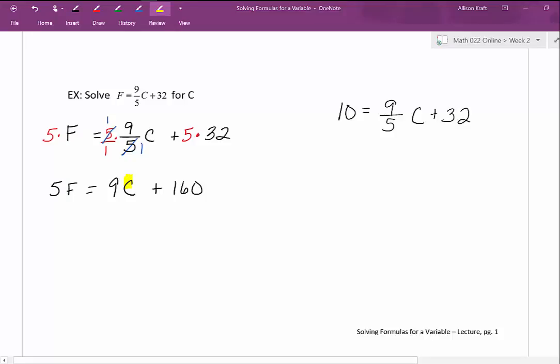We've eliminated the fractions. We're isolating C. I want to get all the other terms away from the C. So back to our problem over here. If I had eliminated the fractions by multiplying everything by 5, I would have 50 equals 9C plus 160. Since all of the terms containing a C are on the right-hand side, I want to move my constant terms to the left-hand side. So in this case, we would subtract 160 from both sides.